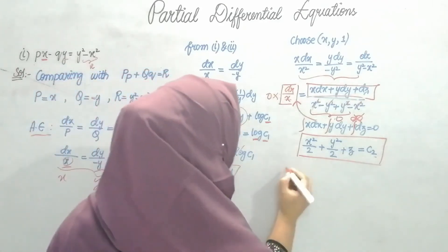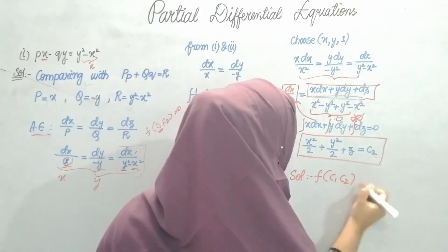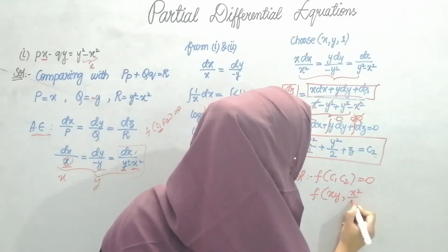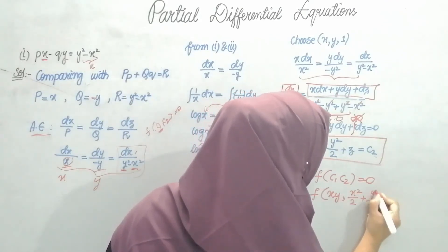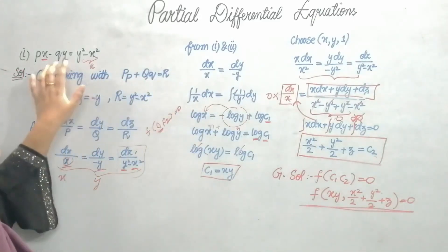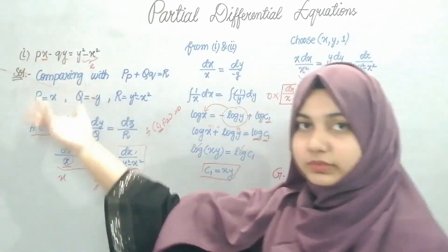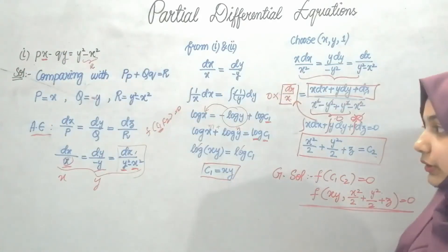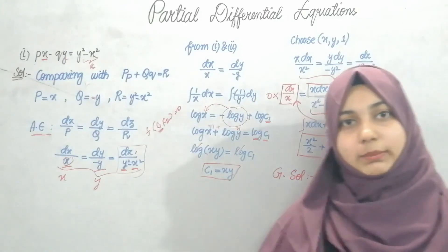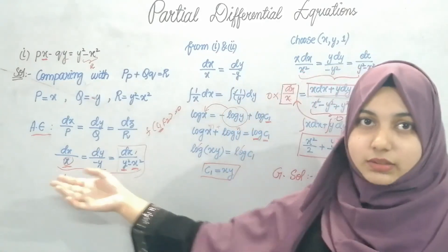The final and very important step: the general solution is f(C1, C2) = 0. Substituting, f(xy, x²/2 + y²/2 + z) = 0. This is the general solution to the given PDE. We combined method of grouping to find C1 and method of multipliers to find C2.